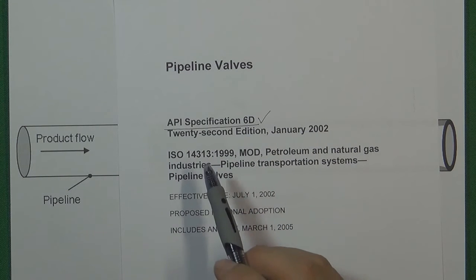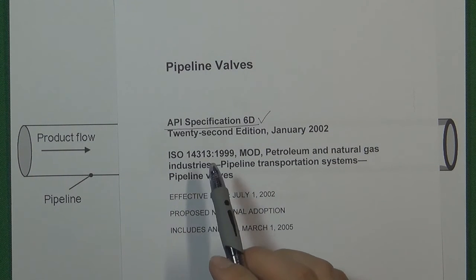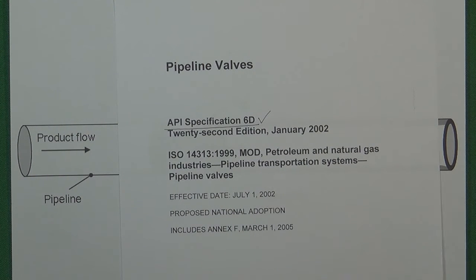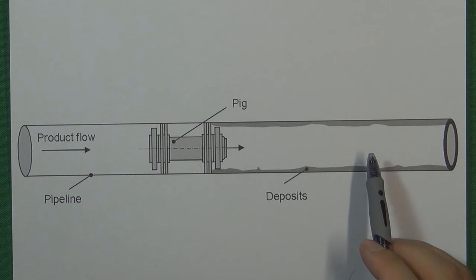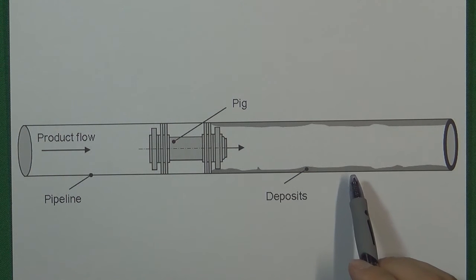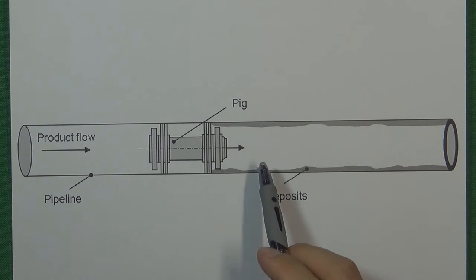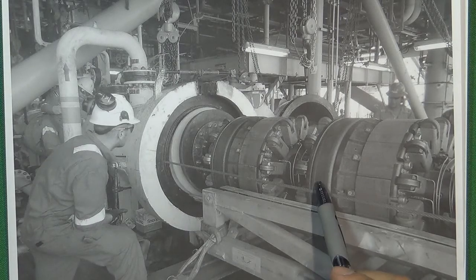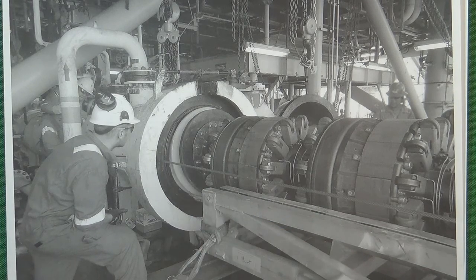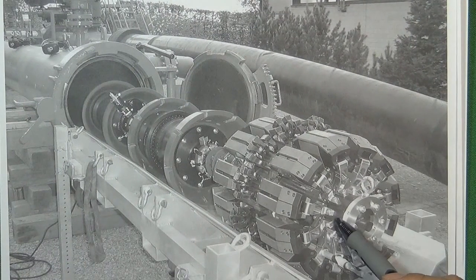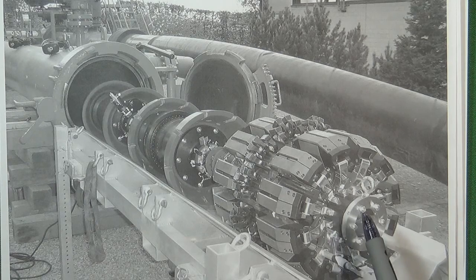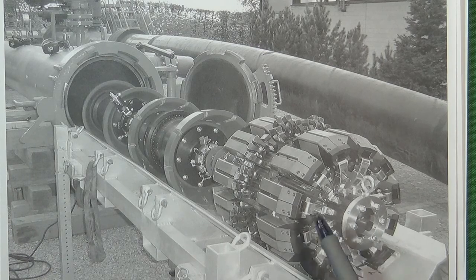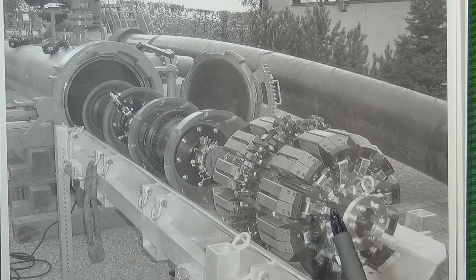The reason why API 6D valves are bigger than ASME B16.34 valves is because they work in the petroleum industry. In the petroleum industry, valves and pipes serve crude oil, which is a very sticky medium. It leaves deposits inside the pipe and can block the system. So we clean the pipe from the inside using equipment called a pig. We need the valve to have enough bore to let this equipment pass through — that is why all valves in the petroleum industry are full bore.